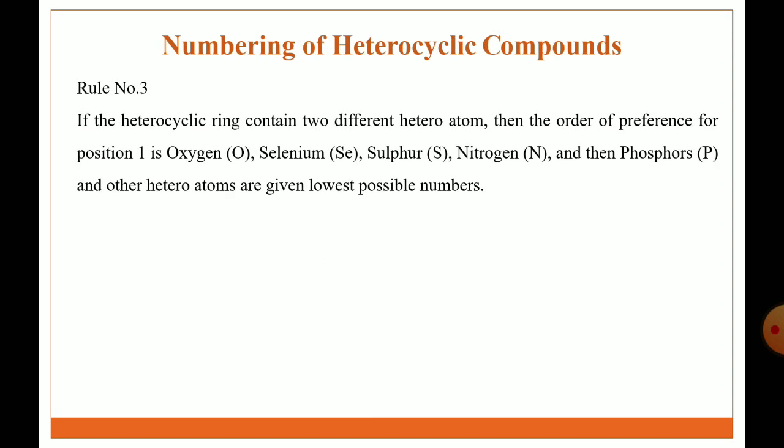Rule 3: if the heterocyclic ring contains two different heteroatoms, the order of preference for position one is given to oxygen, second preference to selenium, third preference to sulfur, fourth preference to nitrogen, and then phosphorus. The other heteroatom is given the lowest possible number. For example, this is a five-member heterocyclic ring containing two different heteroatoms — one is oxygen, the second is nitrogen. As per the rule, the first number is given to oxygen and the lowest possible number is given to nitrogen, that is number three.